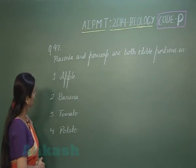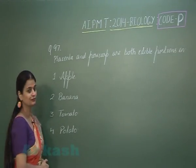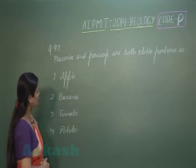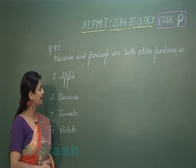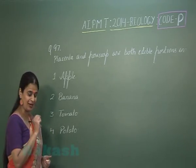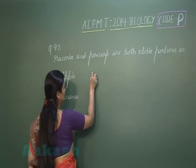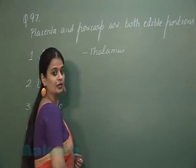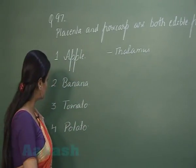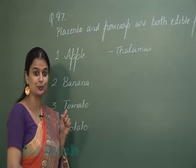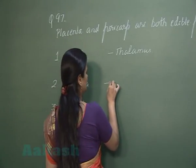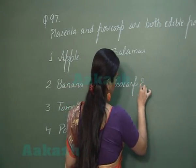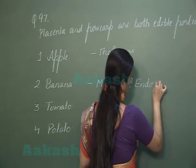Now we have to discuss in which of the following plants the edible portion is placenta and pericarp. In apple, the part which is edible is the thalamus. In banana, the part which is edible is mesocarb and endocarb.